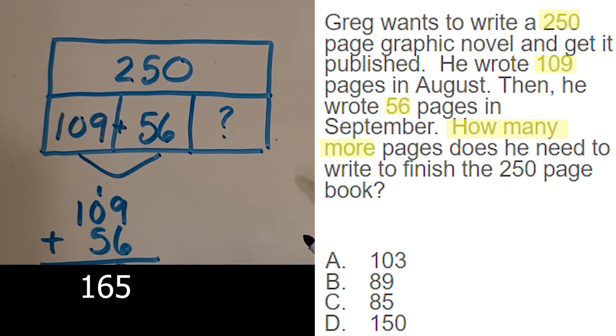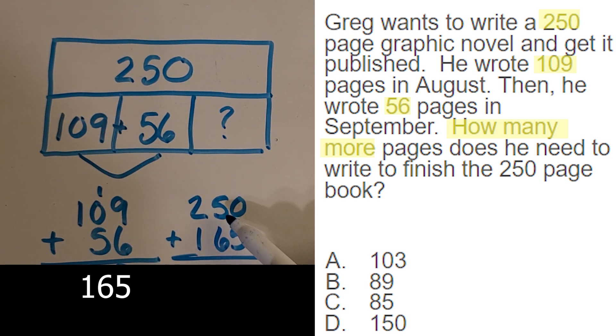So that means he wrote 165 pages so far. And we want to get up to 250. So what can we do with these two numbers? Okay, let's think it through. Sometimes I like to just try something. If I added those pages, that would get me a bigger answer than 250. So what do you think? Okay, I bet some of you are saying, well, he didn't write more than 250 pages. That is the total. So we better subtract.